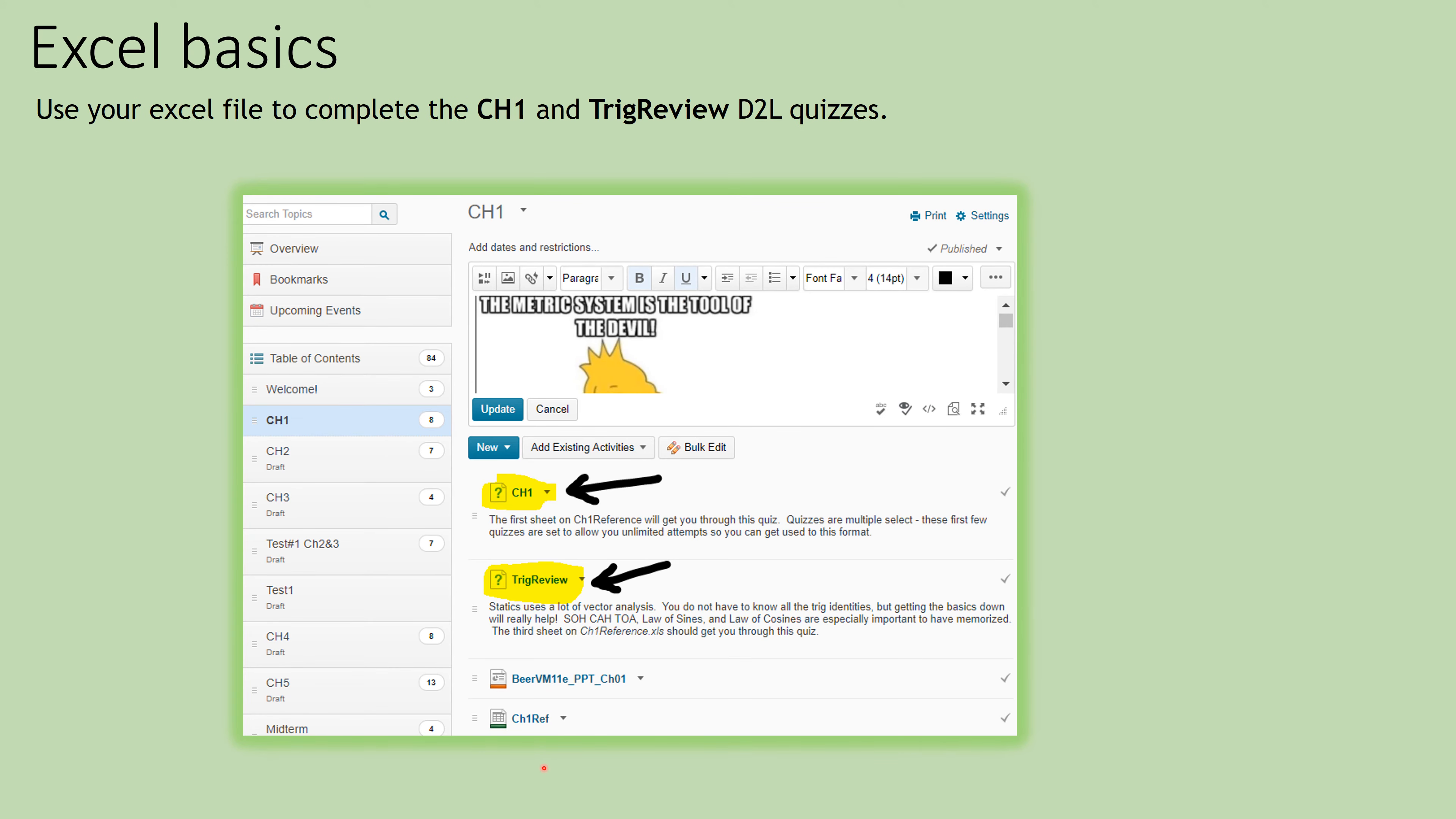Once you are finished filling in everything in your Excel sheet, you can use the Excel sheet to complete both the Chapter 1 quiz. And this is going to have those unit conversion problems in it. And your trig review quiz. And the trig review quiz is going to be off of that third worksheet you filled out. So just click on each of these. This is under Content Chapter 1 again. Or you can get to the same quizzes under Assessment and Quiz. So try out a D2L quiz. These guys are unlimited tries. And it will just help you get used to the D2L quiz format too.